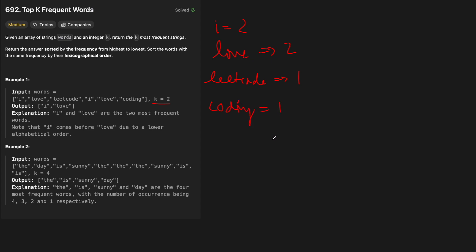So we want the two most frequent words, which are 'I' and 'love'. We can't just stop there because we need to sort words with the same frequency by their lexicographical order — basically which one would come first in a dictionary. 'I' comes before 'l', so the return should be 'I' and then 'love'. We just get the counts of each word and find the top k, then rank ties based on dictionary order.